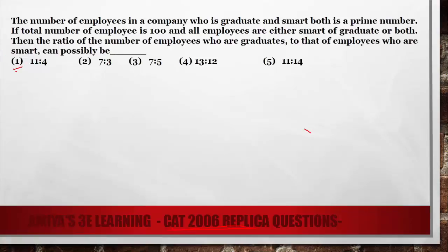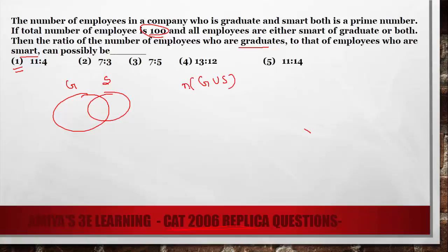The answer of this question is nothing but option number one. We have to find the ratio of number of employees who are graduated to that of employees who are smart. It is given that the total number of employees is 100, and all employees are either smart or graduate or both. It's not a mutually exclusive set, so the outer data is 0 — all data must fall within the union.